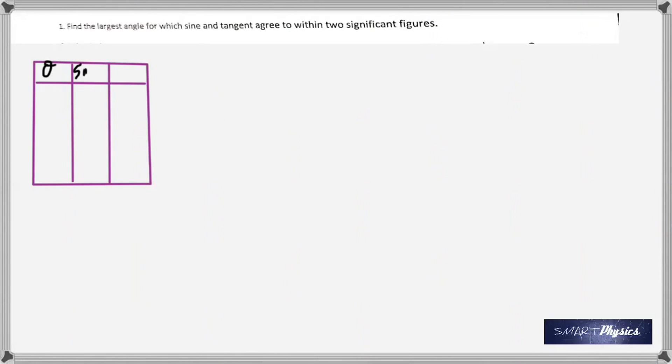Here you have the first question that says, find the largest angle for which the sine and tangent agree to within two significant figures. On the left hand side now you have degrees, next column gives sine theta and the third one gives tan theta.